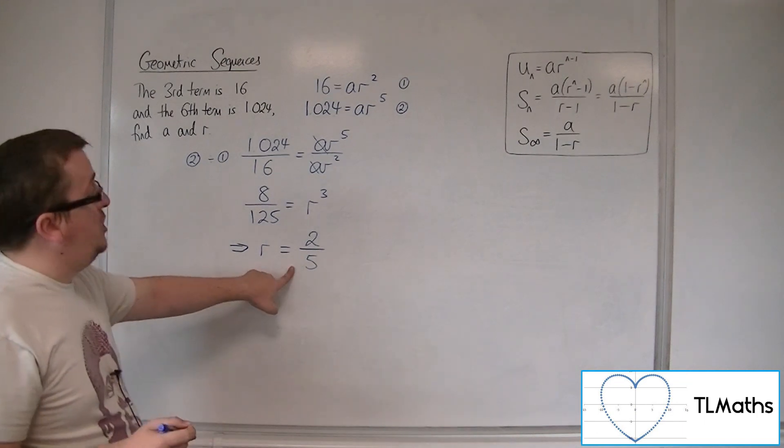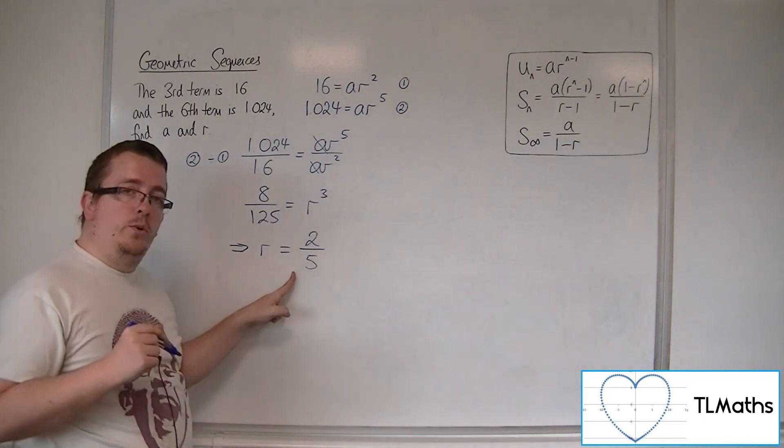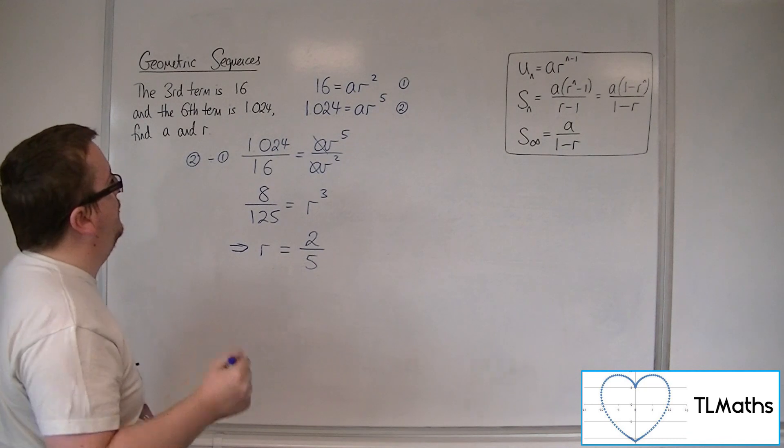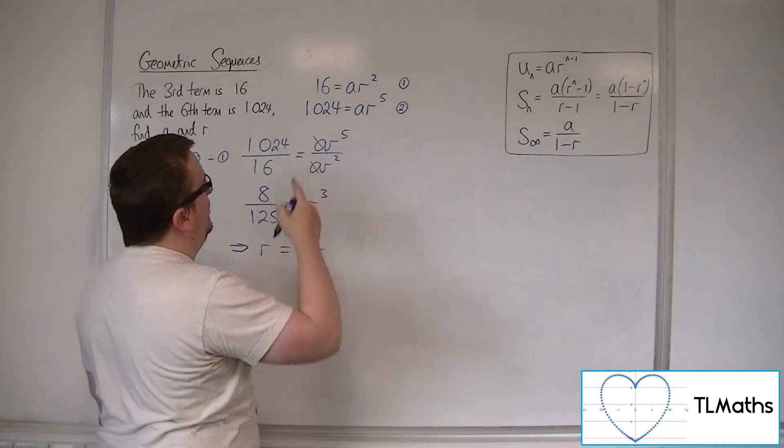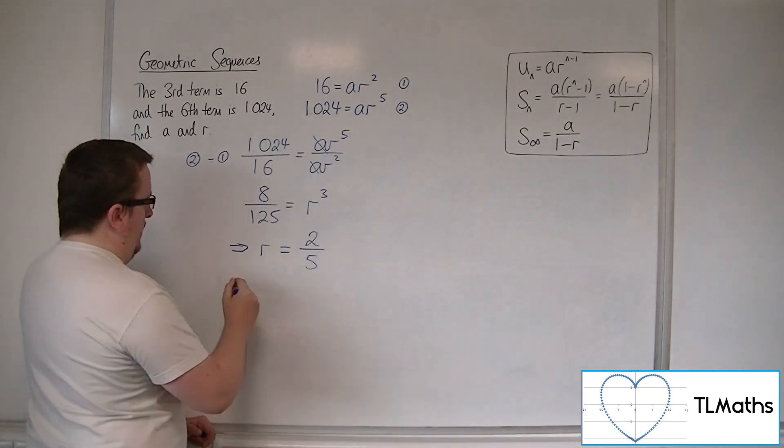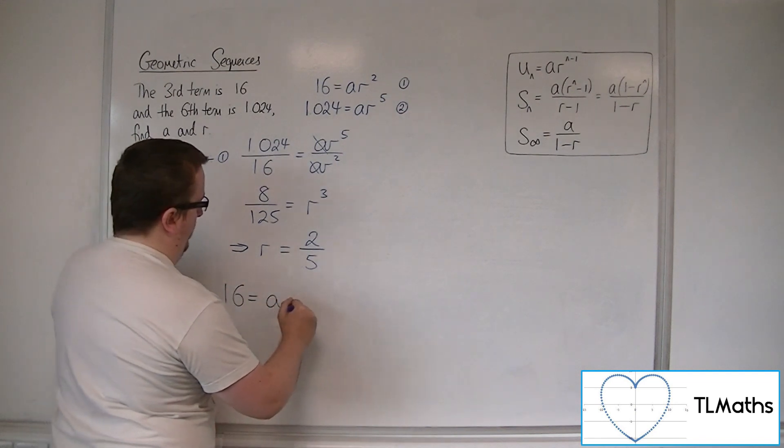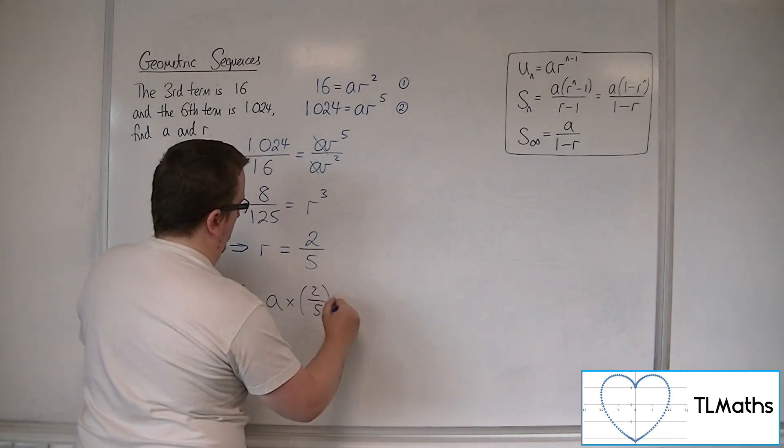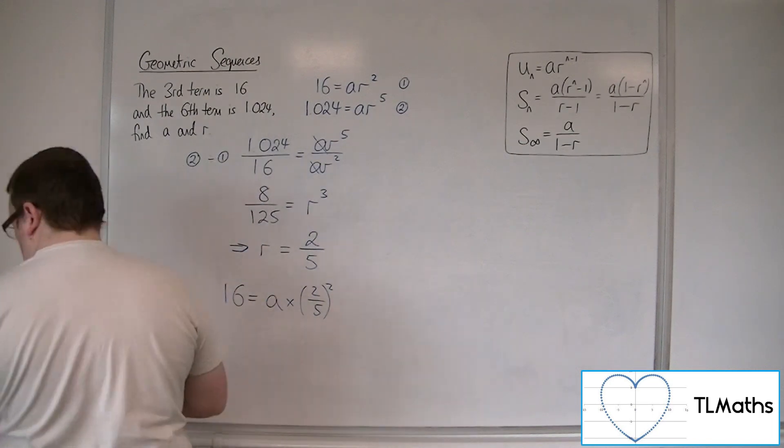I can then substitute that back into one of the two equations, original equations, to find a. So it makes sense to substitute it back into 1. So 16 is equal to a times 2 fifths squared. So 4 over 25.